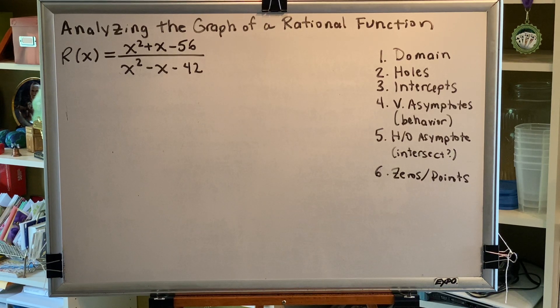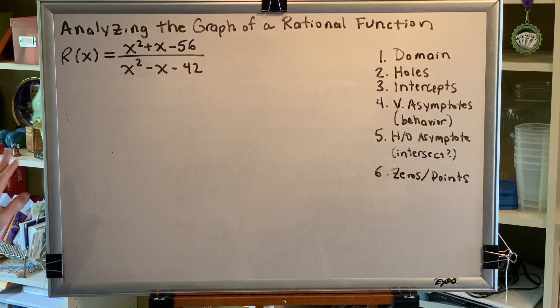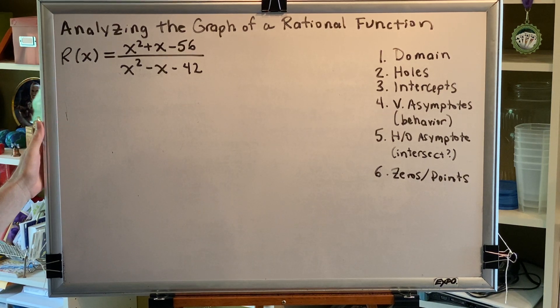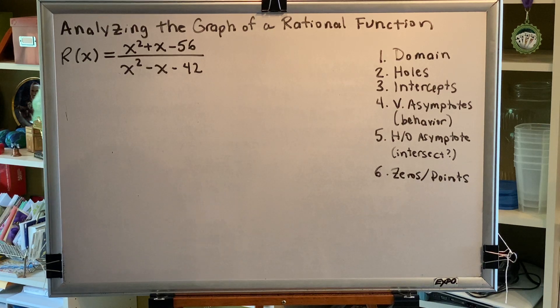The topic of this video is analyzing the graph of a rational function. Let's look at a problem. R of x equals the numerator polynomial x squared plus x minus 56 divided by the denominator polynomial x squared minus x minus 42.